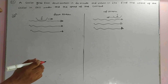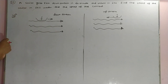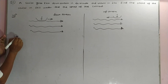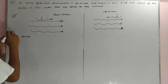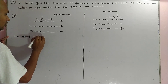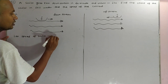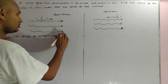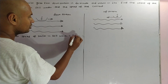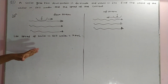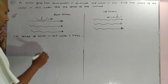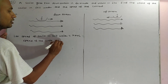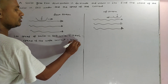This question asks us to find the speed of the sailor in still water and the speed of the current. In this question, you have to assume: let the speed of the sailor in still water be x kilometers per hour, and let the speed of the water current be equal to y kilometers per hour.